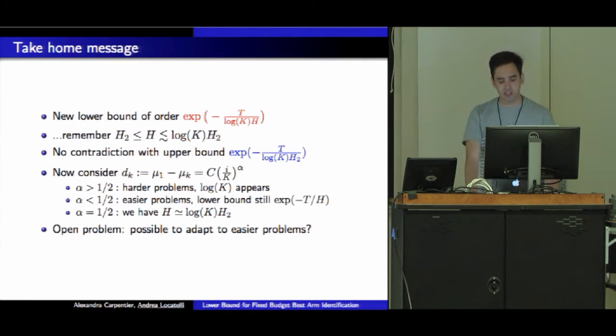The take-home message is we have a new lower bound of order exponential minus t over log K times H. But remember, we have H_2 smaller than H smaller than log K times H_2. It looks like maybe there could be a contradiction because if I take log K times H_2, it's smaller than log K times H, and now the lower bound is bigger than the upper bound. But there's actually no contradiction. The only thing that happens is we have H_2 of order H, and the bounds are now matching for these problems.